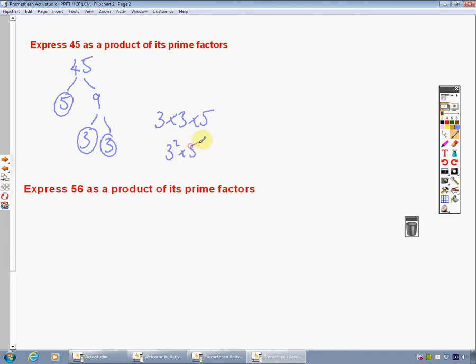Next one, 56. Express 56 as a product of its prime factors. So I'm going to do a factor tree. P, P, F, T. 56. I'm going to go for 7 times 8. That's how I remember 56 is 7 times 8. Something that a lot of people struggle with.